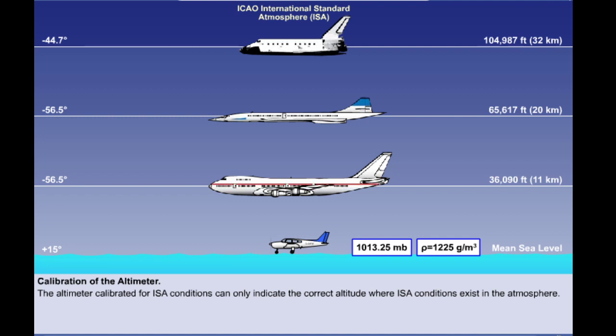Before we move on to looking at how the altimeter works, something apparent is that if the altimeter is calibrated to ISA conditions, the altimeter can only indicate the correct altitude where ISA conditions exist. And as we have seen, atmospheric conditions vary considerably. The lesson on altimeter pressure settings deals with how we overcome this problem.